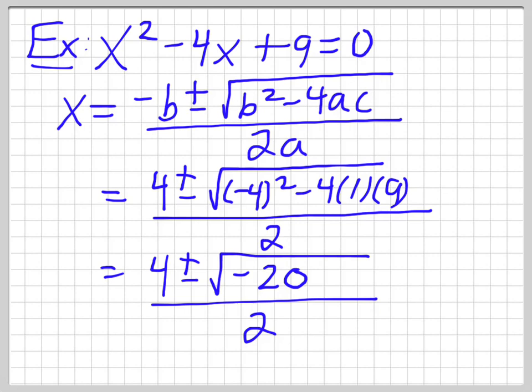So let me just bring you to a new slide. So 4 plus or minus negative 20 over 2.